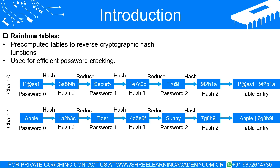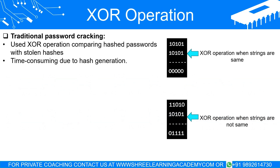A hash is nearly impossible to revert to the original password. Unfortunately, determined hackers are continually devising ways to break this line of defense, one of which is the use of rainbow tables. These tables can save substantial time and computational resources in cracking hashed passwords, which we'll explore more in depth in the following sections.